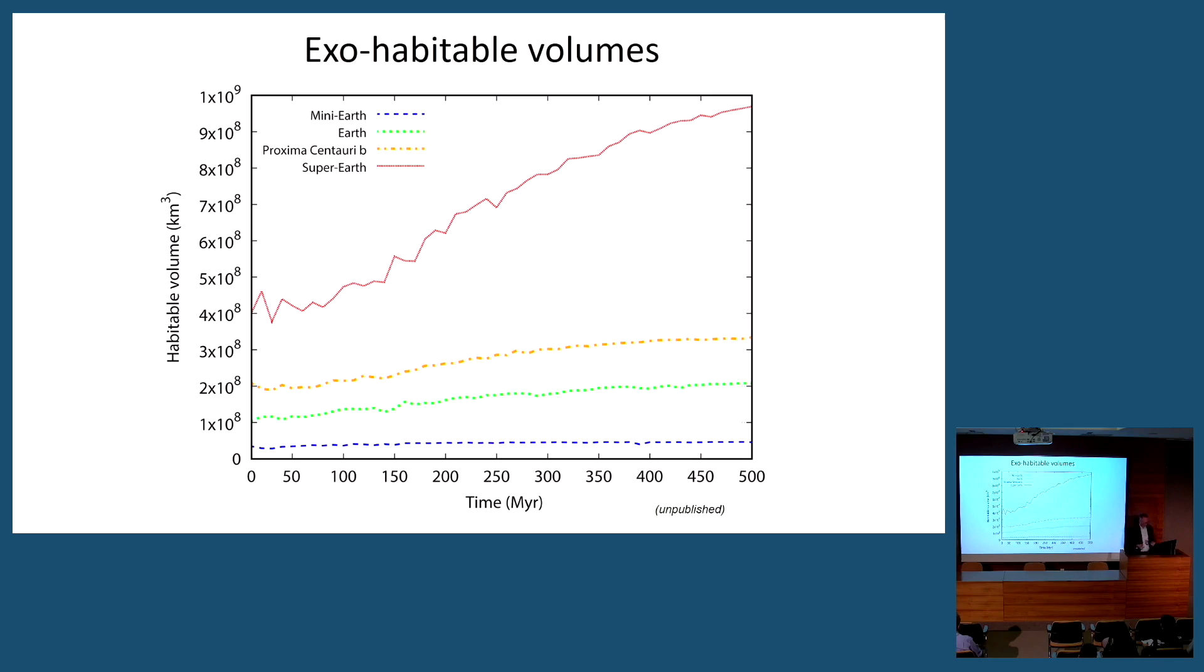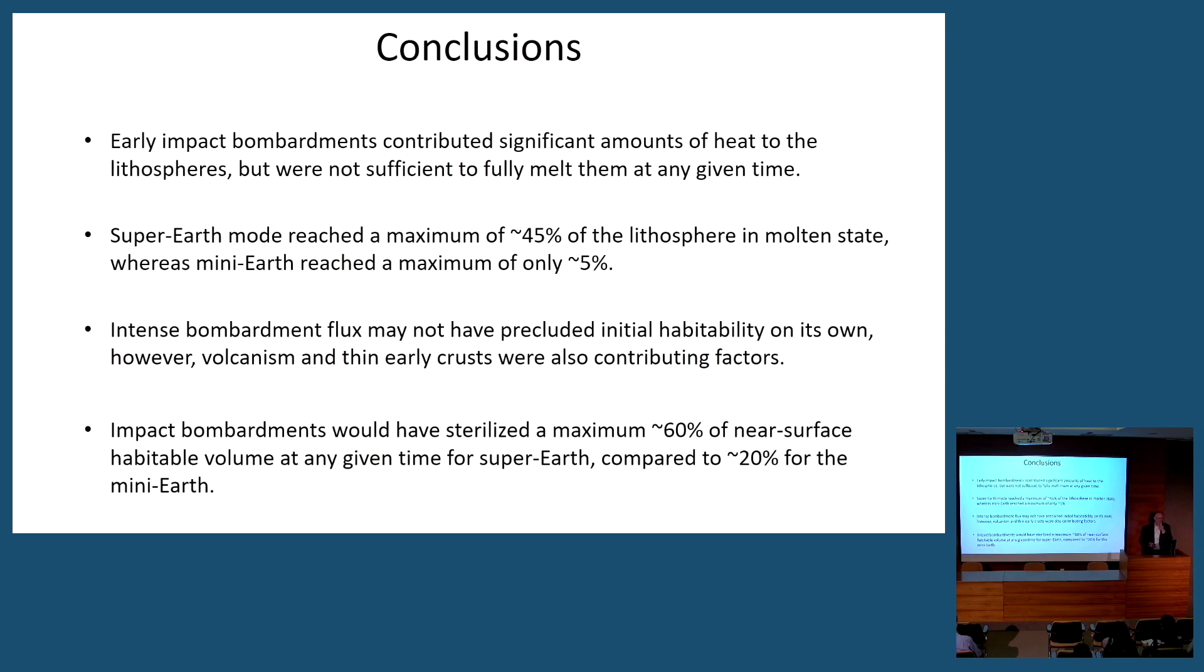Here are my conclusions. I told you that early impact bombardments are a common feature of planets. None of the scenarios I investigated were sufficient to fully melt the crust in any of these planets at any given time. Super-Earth mode reached about 45% of the crust molten. Intense bombardment may have precluded initial life, but as you go along, nothing stops life from continuing once it is established. They could have sterilized maybe 60% of near-surface habitable volume, but that leaves a lot left behind.